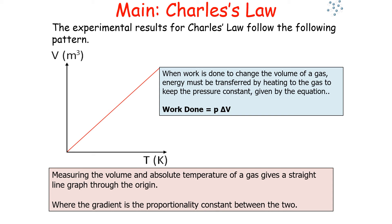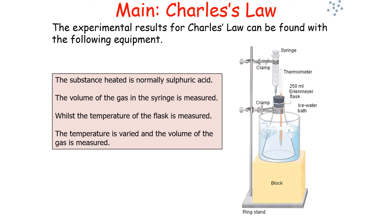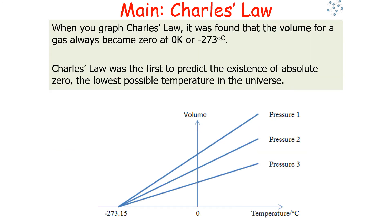When work is done to change the volume of a gas, energy must be transferred by heating to keep the pressure constant. We can say work done equals pressure times the change in volume. This can be worked out experimentally by heating a substance — normally with sulfuric acid — measuring the volume of gas in a syringe and the temperature of the flask, varying temperature and measuring volume to derive Charles' law. When graphing Charles' law, it was found that the volume of a gas always becomes zero at minus 273 degrees Celsius, or zero Kelvin. Charles' law was the first to predict the existence of absolute zero, the lowest possible temperature in the universe.